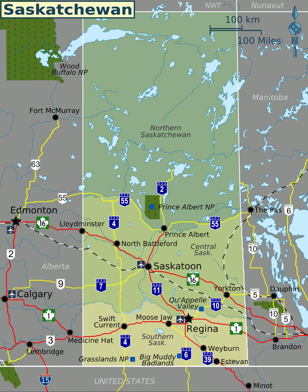The overwhelming majority of Saskatchewan's population is located in the southern third of the province, south of the 53rd parallel. Saskatchewan contains two major natural regions: the boreal forest in the north and the prairies in the south.